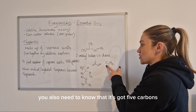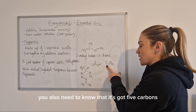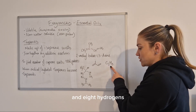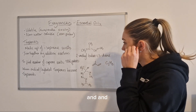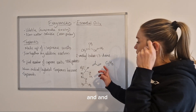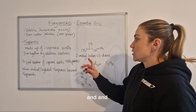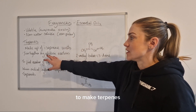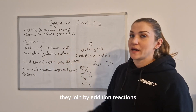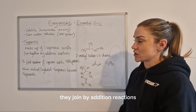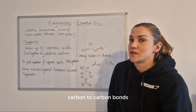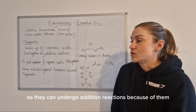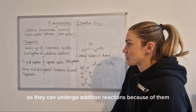You also need to know that isoprene has five carbons and eight hydrogens (C₅H₈). When isoprene units join together to make terpenes, they join by addition reactions, because the carbon-to-carbon double bonds allow them to undergo addition reactions.